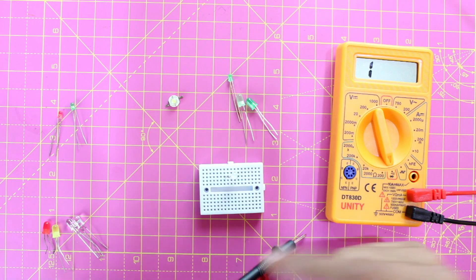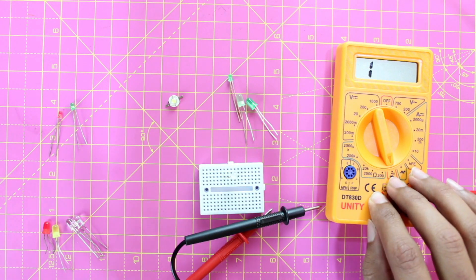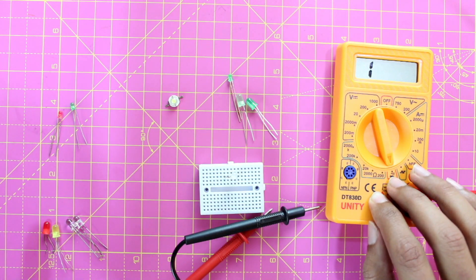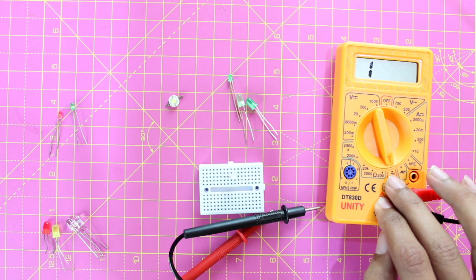So that's it, guys. This is how you can use a simple multimeter to check any type of LEDs that are available with you. Hope the video was helpful and you learned something useful. Thank you for watching, have a nice day!